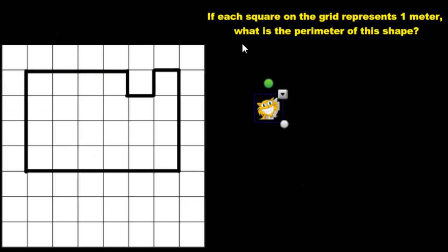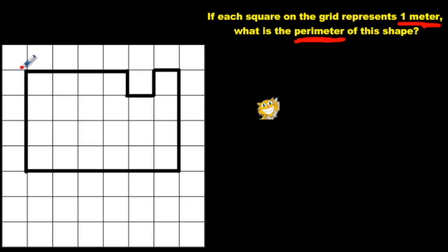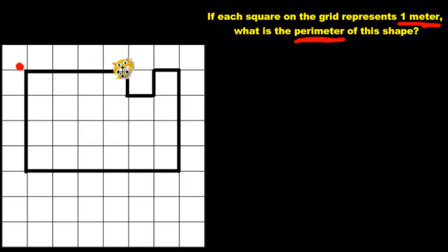We've got our kitty cat back in question two. If each square on the grid represents one meter — let's underline that, that's important. We've got one meter for each square, so it's not a centimeter anymore, it's going to be a meter now. What is the perimeter of this shape? So we'll pick a starting point for our kitty cat. Let's start him over here. He's going to go meow, meow, meow, meow — four blocks. So I'm going to write a four, but it's meters this time.